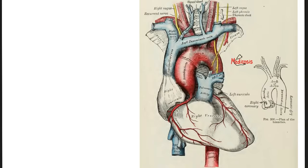This is the right vagus nerve and this is the left vagus nerve — both are cranial nerve number 10. The right vagus nerve, after descending, gives the recurrent laryngeal nerve, which loops around and below the right subclavian on the right side. But the left vagus is different: it gives the recurrent laryngeal nerve that arches below the aortic arch, just near the ligamentum arteriosum — formerly the ductus arteriosus.